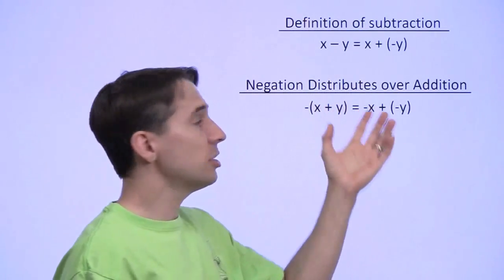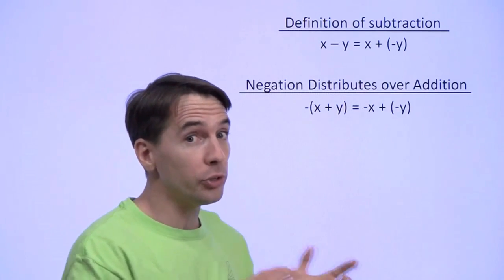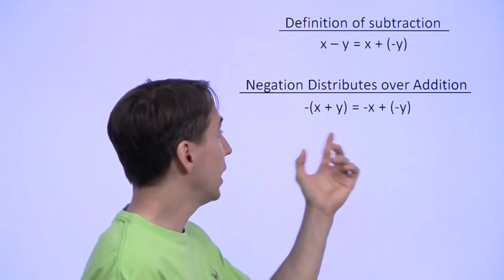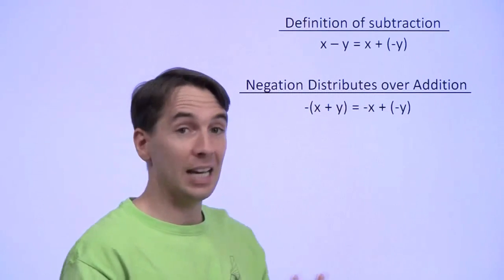Specifically, I want to look at this one: negation distributes over addition. This isn't a new rule, this is just the distributive property. You have the negation of the sum, you get the negation of the first term plus the negation of the second term.